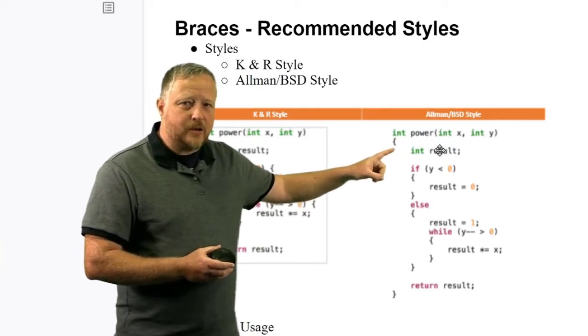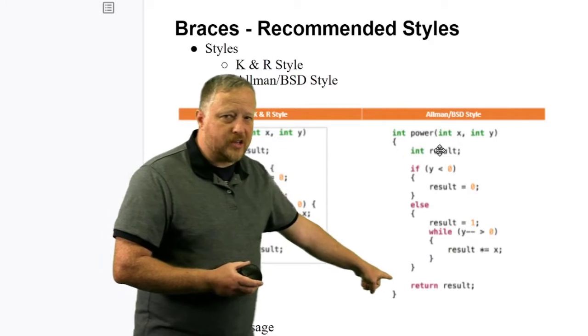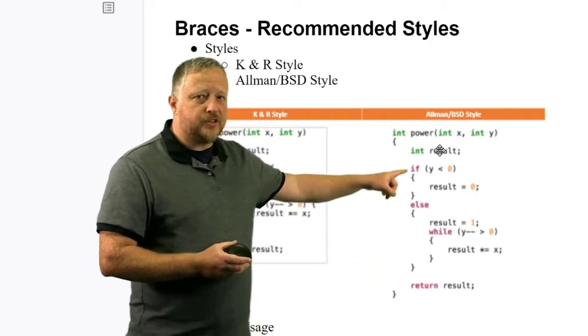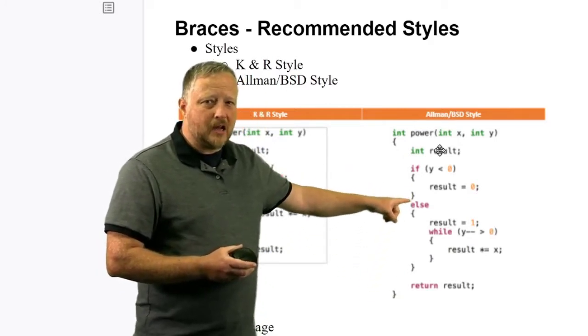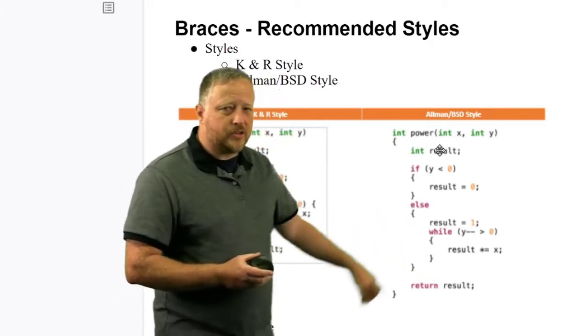I know exactly where this function is starting, and if I scroll all the way down, I know exactly where it's ending. Same thing for this if statement. They're just kind of like a block-like structure here. Here's the else. Here's the while loop that's right here. It's an up and down structure.